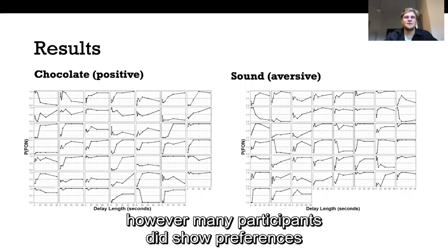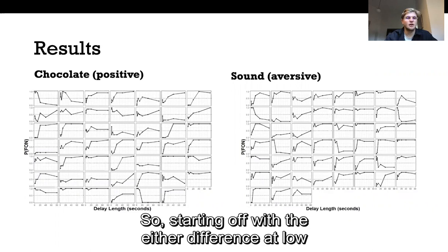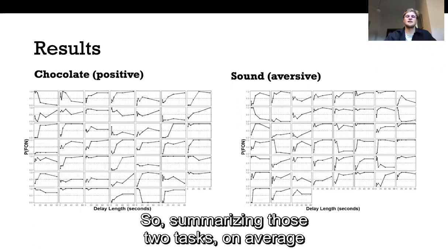Individual variance was still large between different participants however many participants did show preferences similar to those seen in the average data. So starting off at indifference or low and then going higher with delay length.